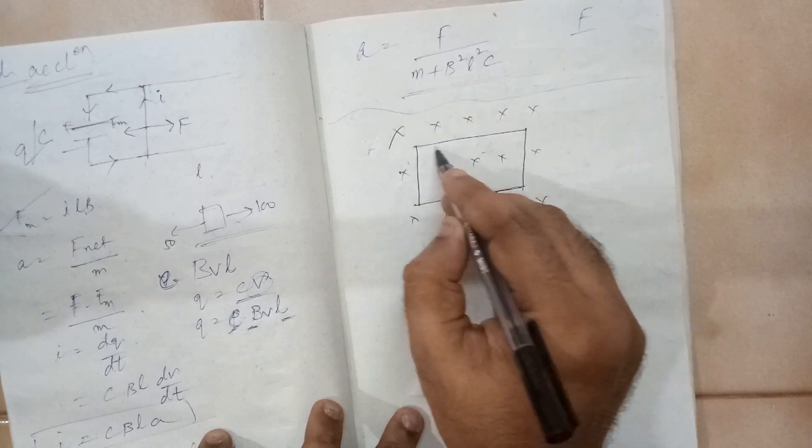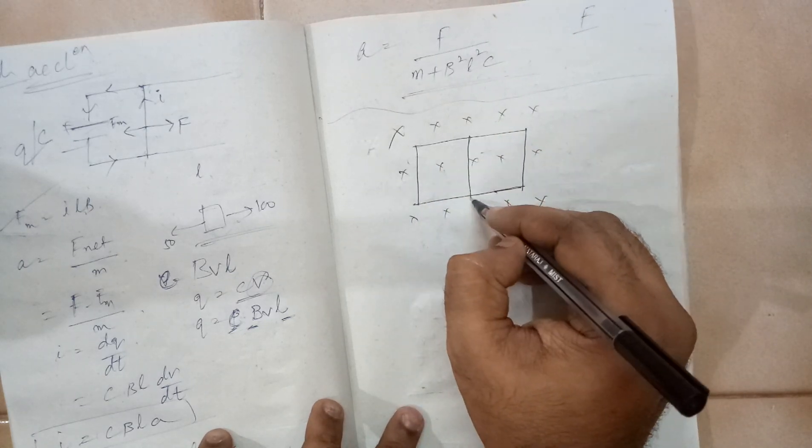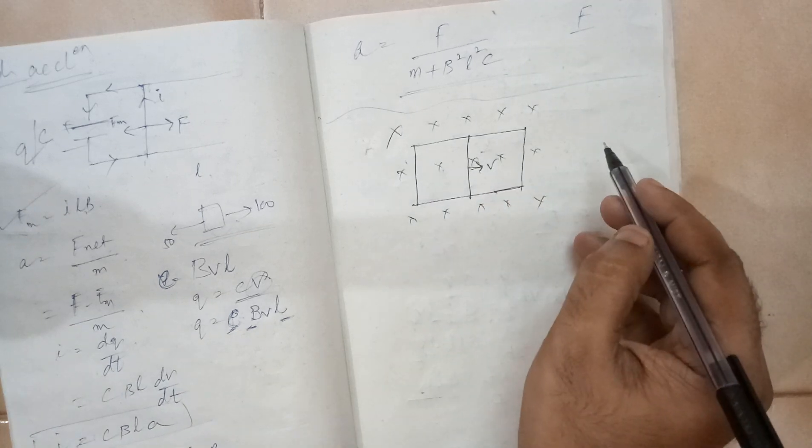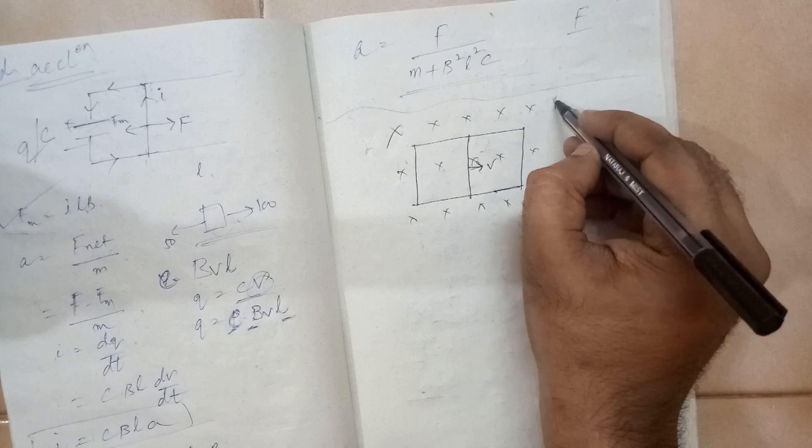System is provided like this. There is a frame and this is moving with speed V. The magnetic field is B.